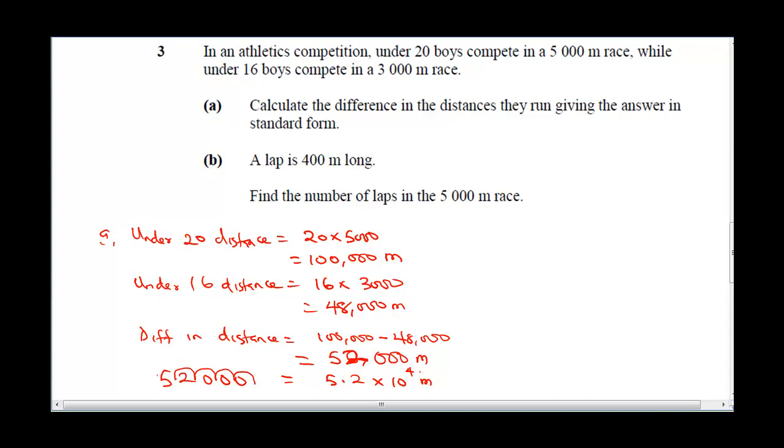Option b says a lap is 400 meters. Find the number of laps in 5000 meters. To solve this question we say 400 meters equals 1 lap. Now 5000 meters will equal x laps. To get it, we're going to do x = 5000 × 1 divided by 400, so that will be 5000 divided by 400.